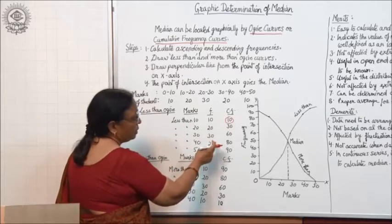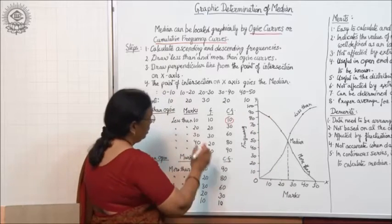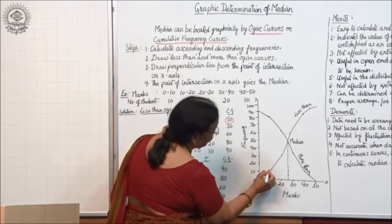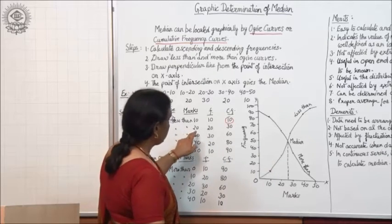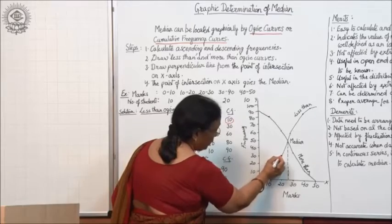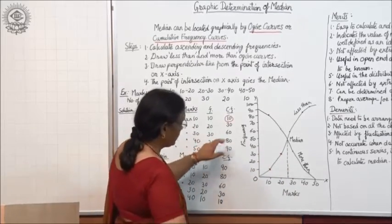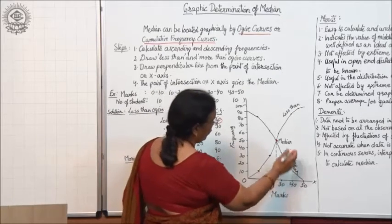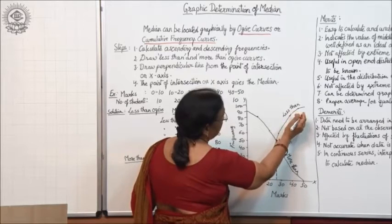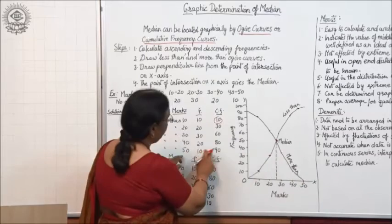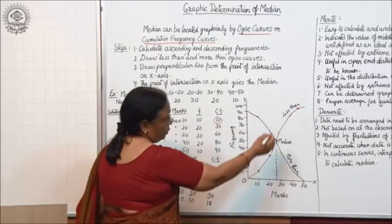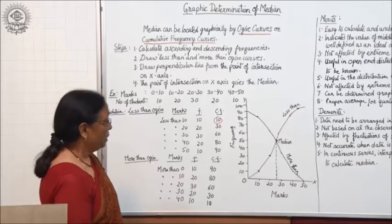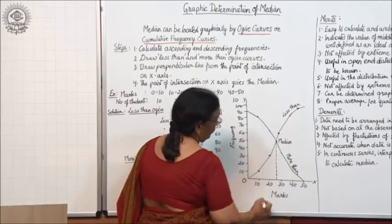According to the data, draw the less-than ogive. Plot the points: less than 10 there are 10 — this is the first point; less than 20 there are 30 — this is the next point; less than 30 there are 60; less than 40 there are 80; less than 50 there are 90. Join all five points to get the less-than ogive curve.